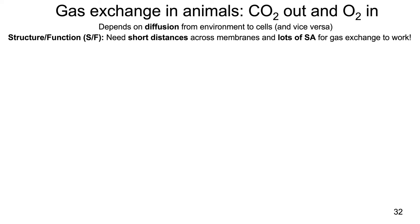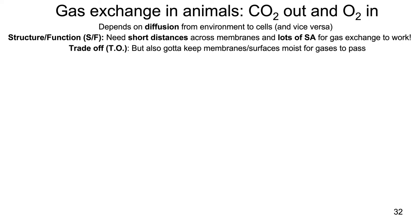With a high surface area to volume ratio, there is a trade-off. If you have a lot of surface area to volume ratio, you can lose a lot of water. But you also really have to keep these membranes and surfaces moist for gases to pass through them. If those surfaces dry out completely, the cell membranes dry out and are no longer permeable for gases to move in and out. So those membranes have to stay moist, but at the same time you need a lot of surface area — and when you have a lot of surface area, it's very easy to lose water. That is the trade-off.